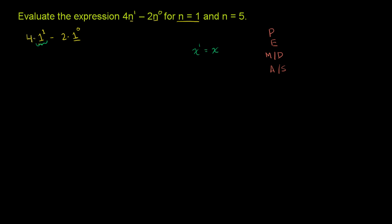So this is going to be 4 times 1 minus 2 times 1 to the 0th power. Now, any number other than 0 to the 0th power is going to be 1. So if I tell you x to the 0th power is equal to what, and I tell you that x is not equal to 0, what is x to the 0th power? You should immediately know that it is equal to 1.